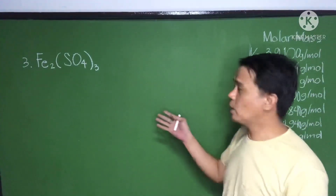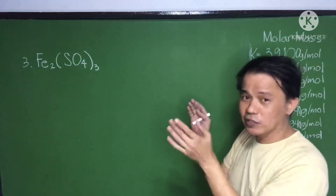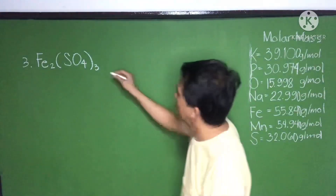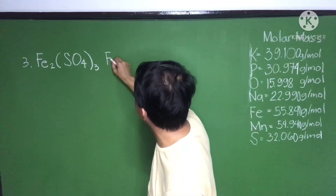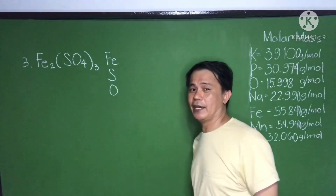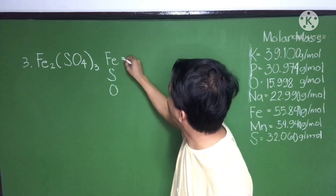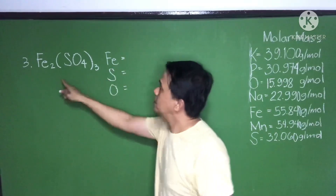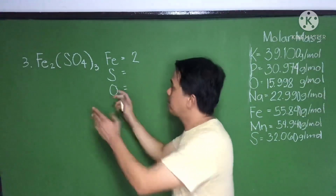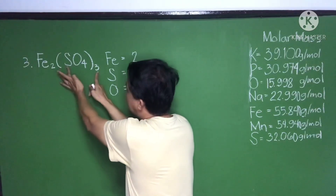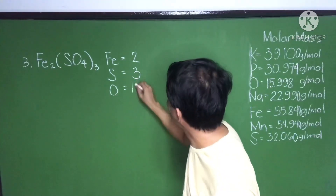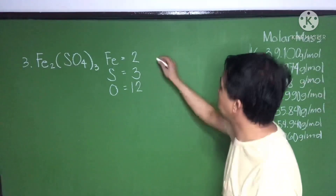The third example is a tricky one. You can see a parenthesis here — you're going to use the distributive property for this kind of compound. Let us first identify the elements: Fe (iron), S (sulfur), O (oxygen). Get the total number of atoms. Iron: two. For sulfur, this is the tricky part — you're going to distribute the subscript outside the parenthesis: sulfur would be three. Oxygen: four times three is equal to twelve.